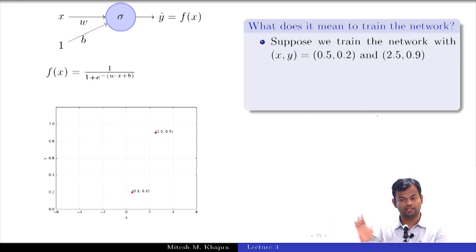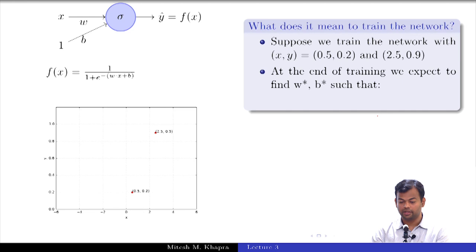We expect such that at the end of training, if I plug in the value 0.5 here what should happen? 0.2 right. So this is what you expect at the end of training. If you plug in the value 0.5 it should be very close to 0.2 the output, and if you plug in the value 2.5 it should be very close to 0.9. This is exactly what you expect and this is what training means.